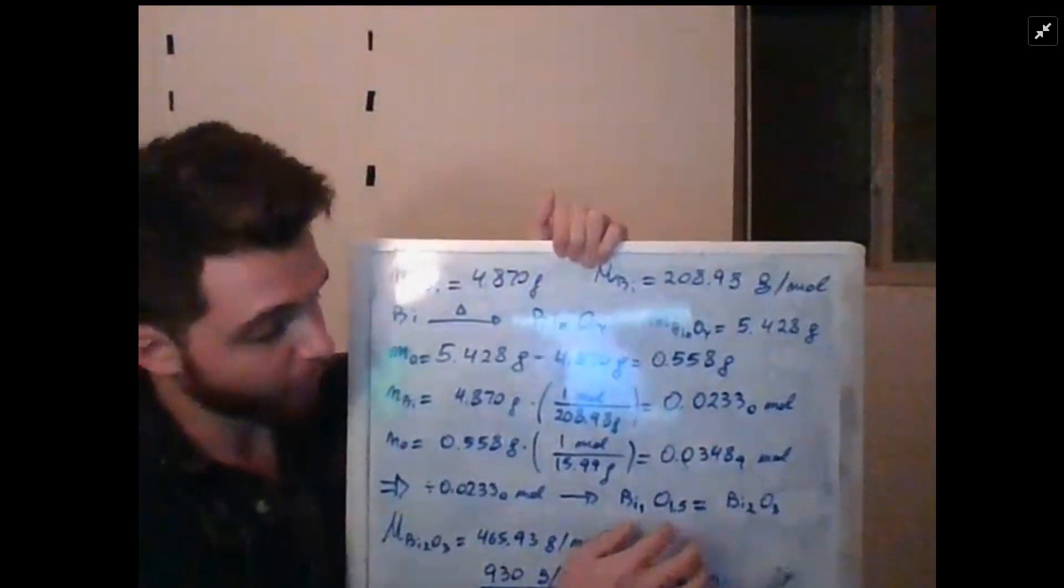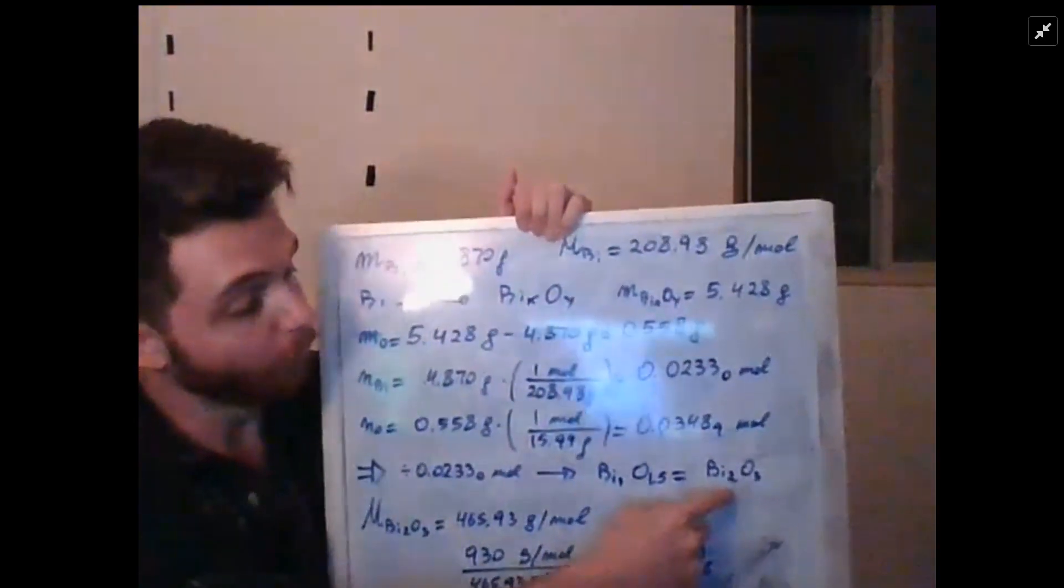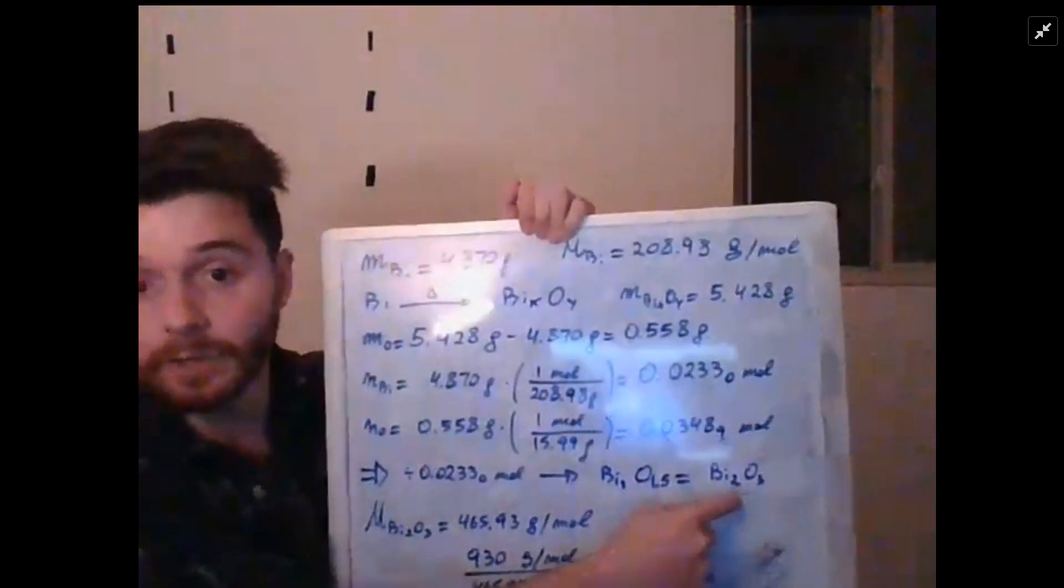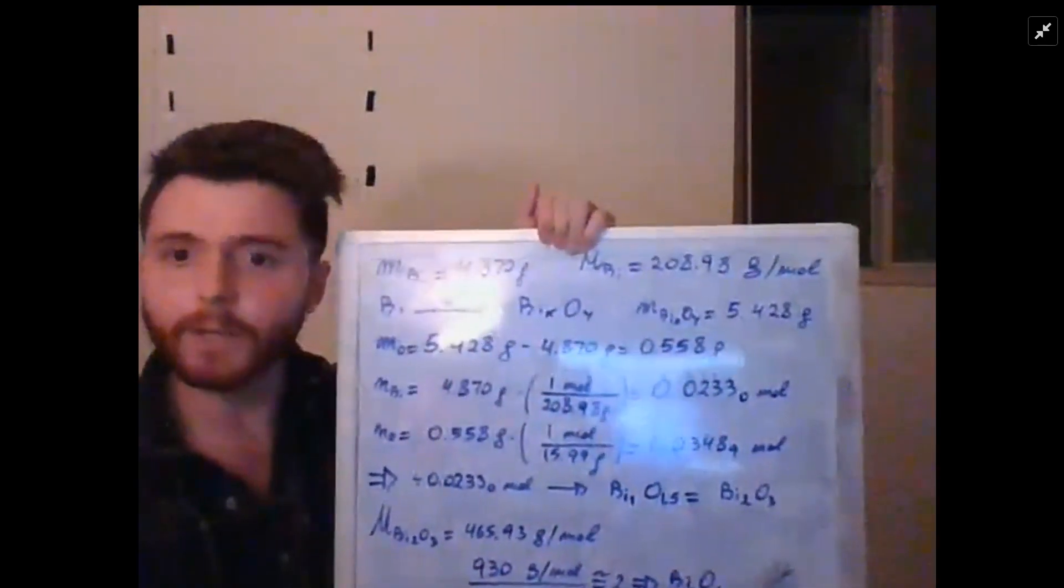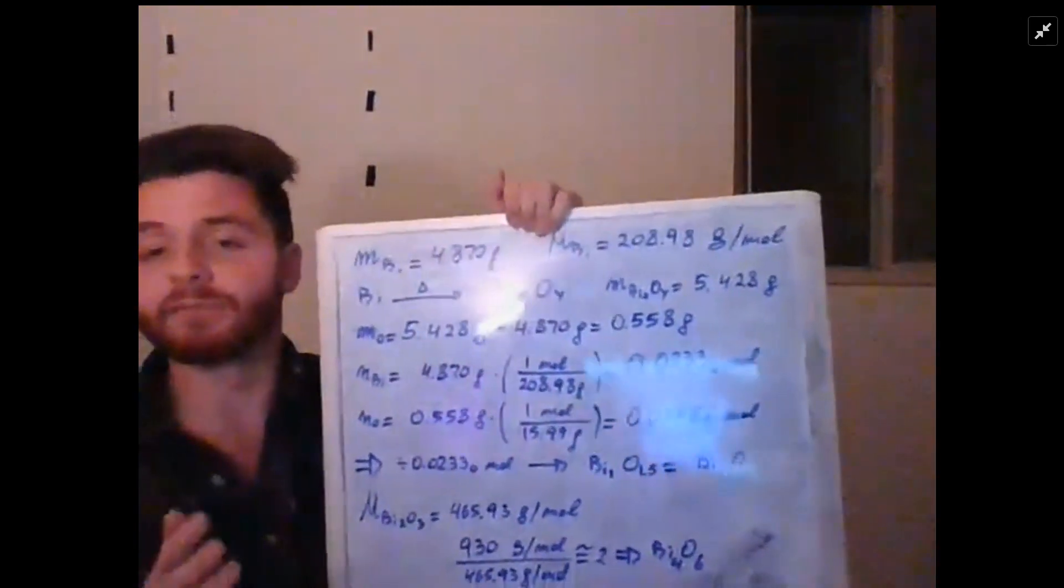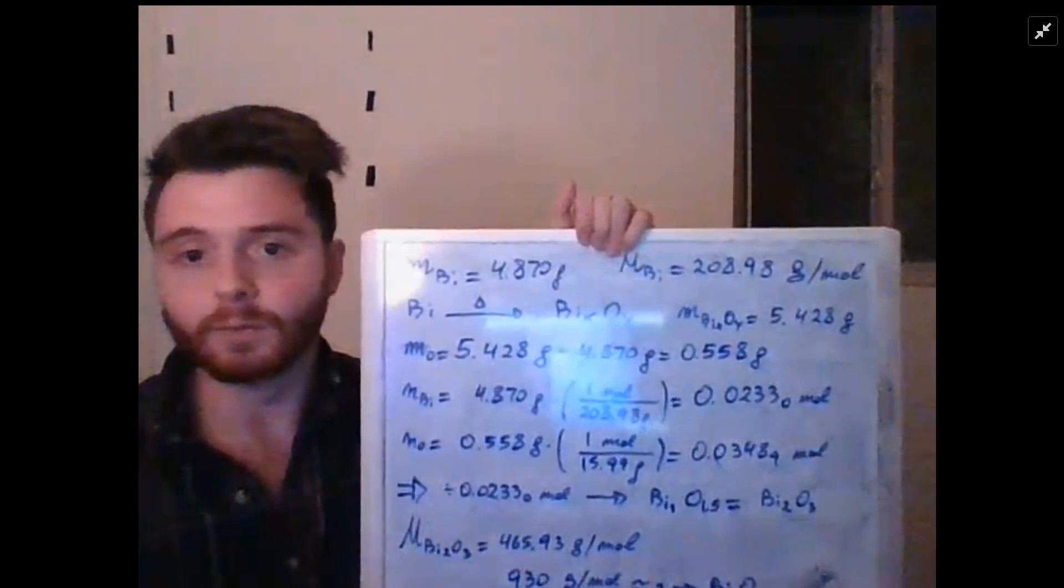We're going to multiply this by two and we're going to have Bi₂O₃, bismuth trioxide. You'll see that this won't have an effect on the final result.